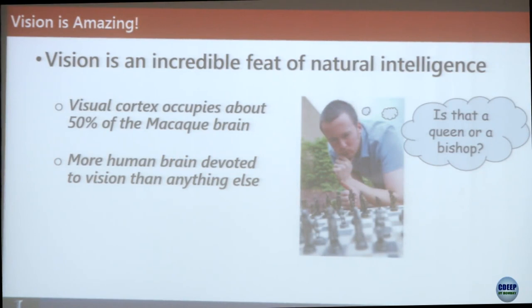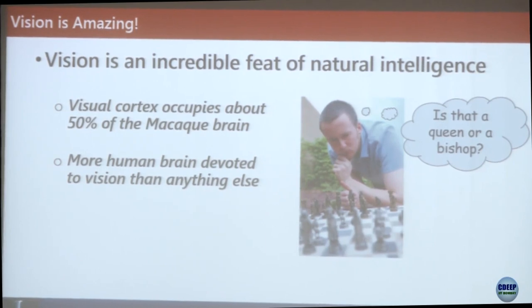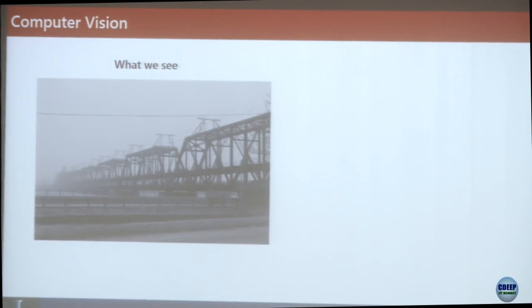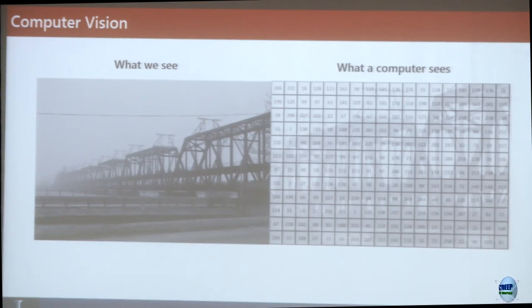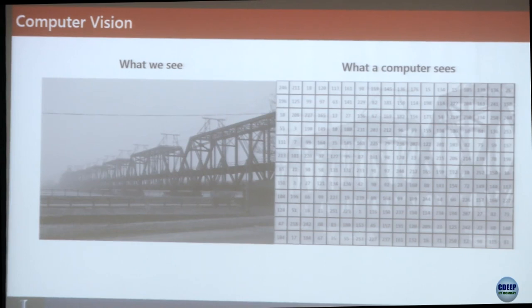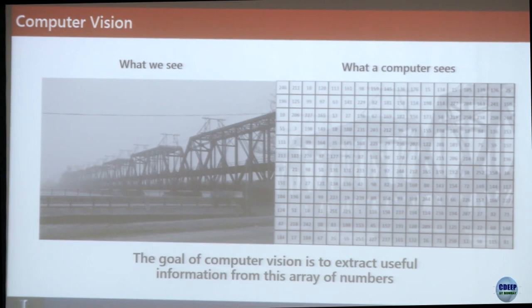Vision is an incredible feat of human intelligence. For this macaque monkey, 50% of the brain is devoted to vision, and more of the human brain than any other function is associated with vision. I'd like you all to look at this photograph — it's a bridge, actually a double-decker bridge with a railroad track on top and a car track on the bottom deck. What does the computer see? It just sees an intensity value for each pixel — basically an array of numbers. The goal of computer vision is to extract useful information from this array of numbers.